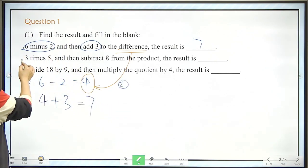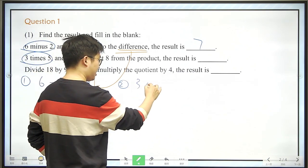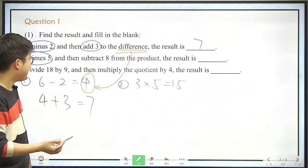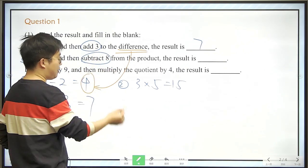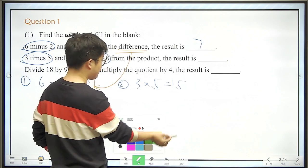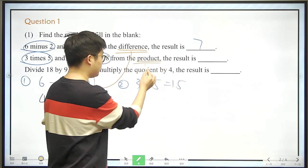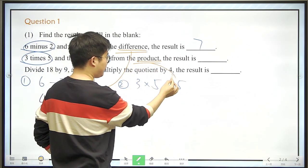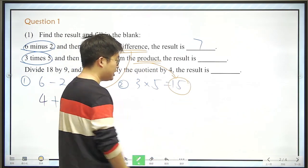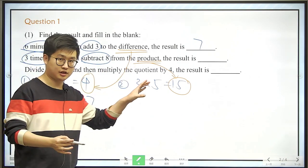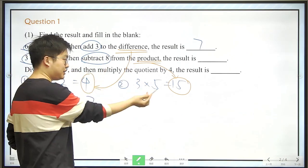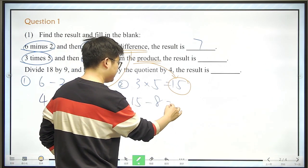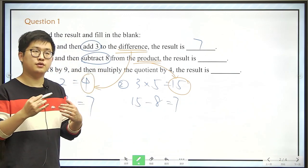And then let's move on to the next one, that we should 3 times 5, that is 15, right? And then subtract 8 from the product. Here comes another word, product. So what is product? Product is the result of a multiplication. Here is 15, 15 is the product. So we should subtract 8 from 15, that is 15 minus 8. The answer is also 7.